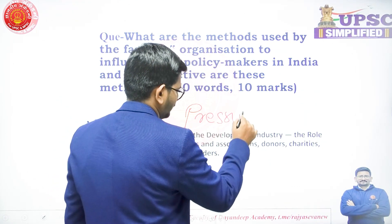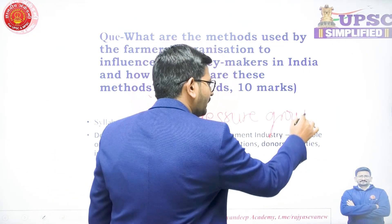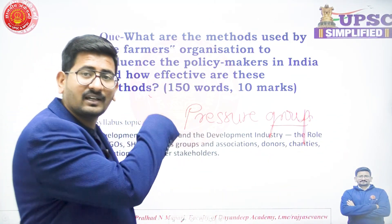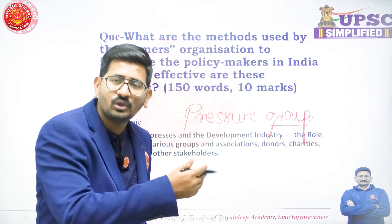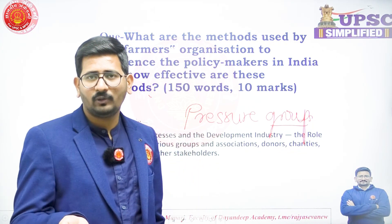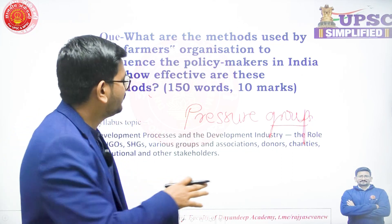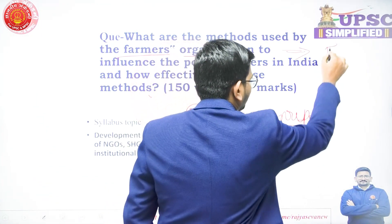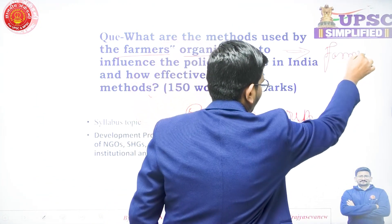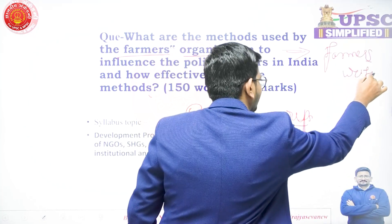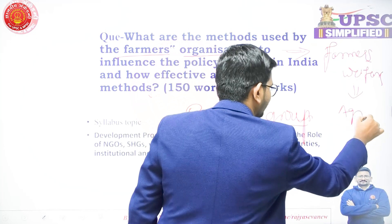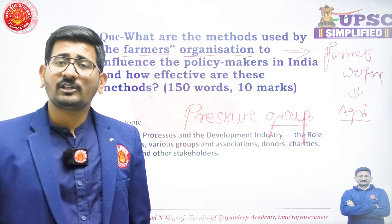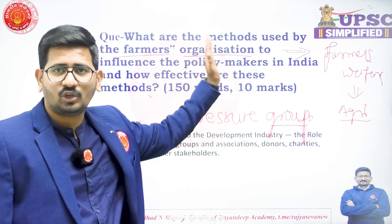Farmer organizations are part of or a subset of the bigger concept known as pressure groups. We all know pressure groups. The core function of pressure groups is to influence policy decisions in favor of their clients. For a farmers organization, their primary concern is farmer welfare — they aim to shape agriculture policies, acts, and decisions. The question asks us to enlist the different methods they use.